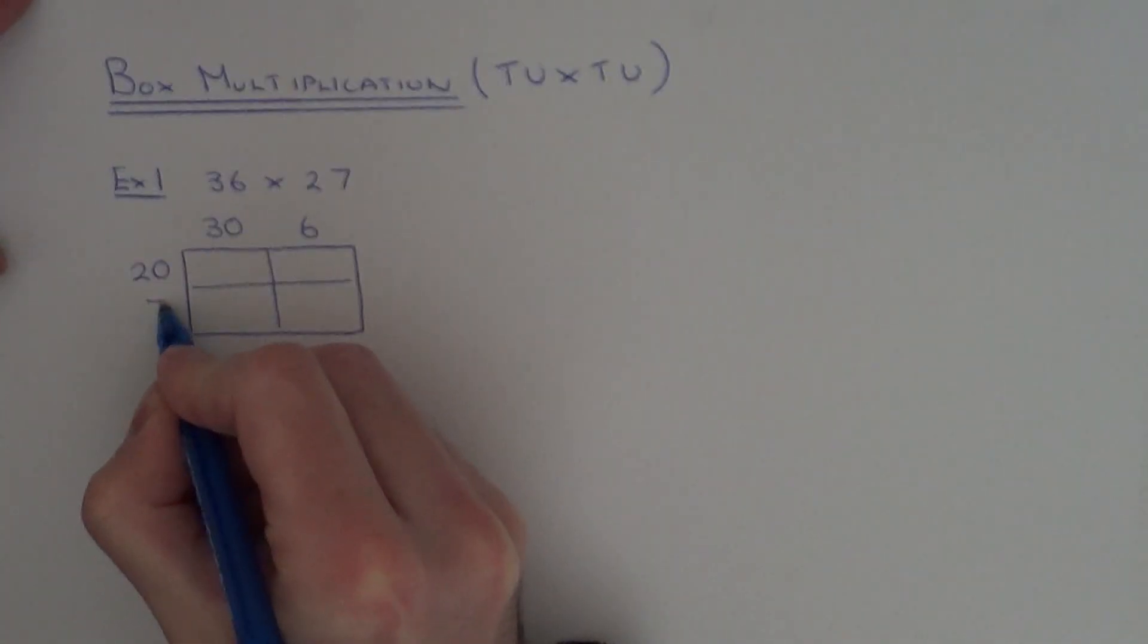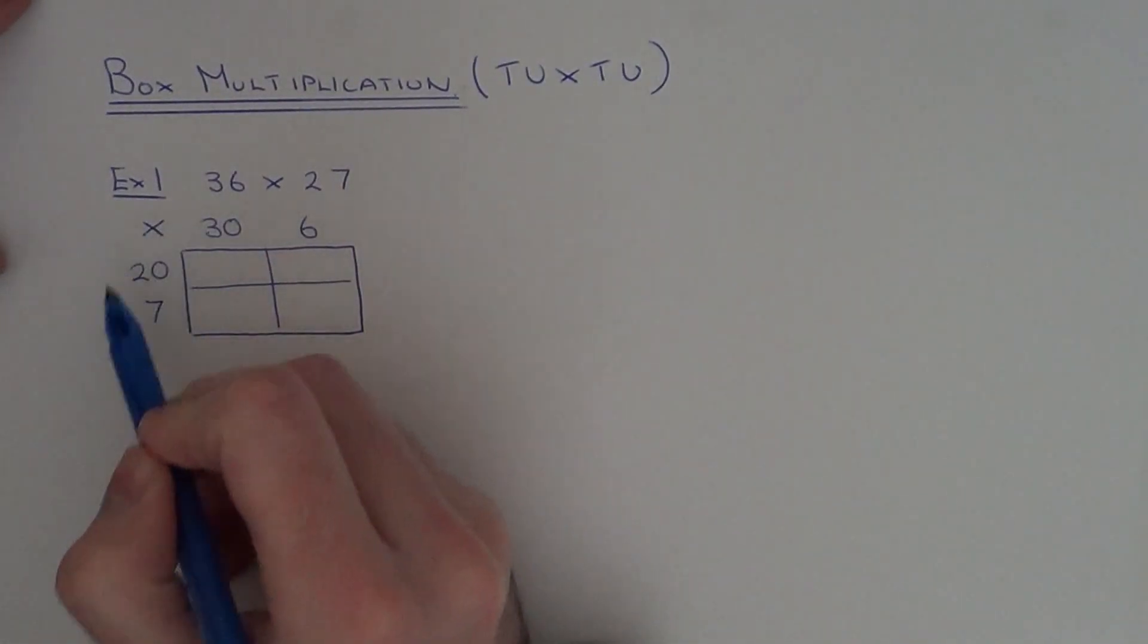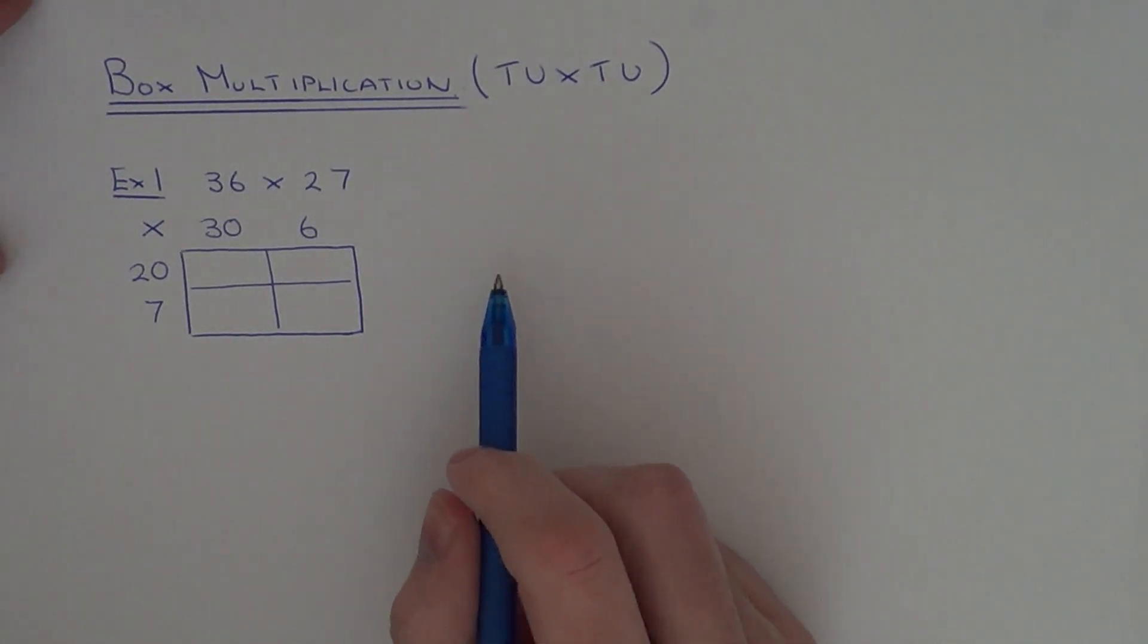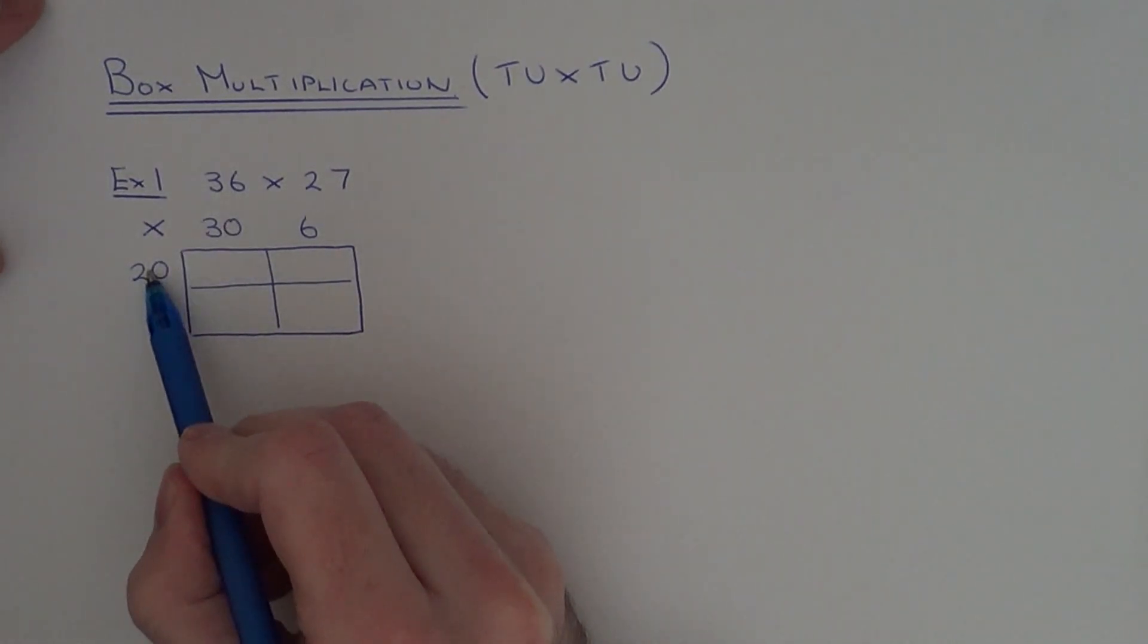So it's 20 and 7. And just put a multiplication sign in the top left hand corner just to let everybody know you're doing a multiplication. So for this box here what we need to do is multiply the number at the top by the number on the side.